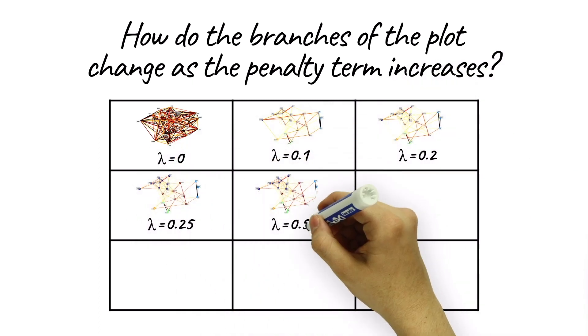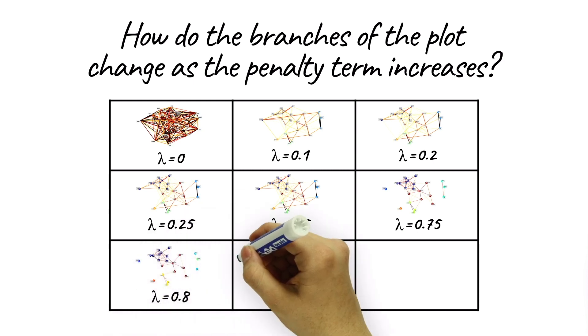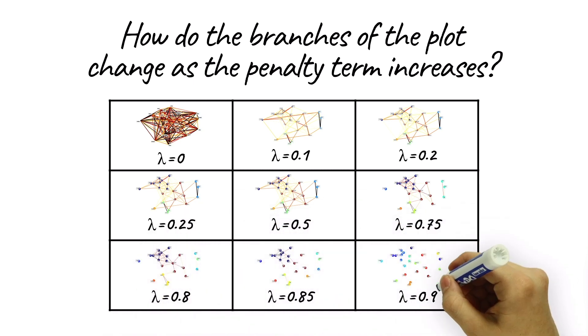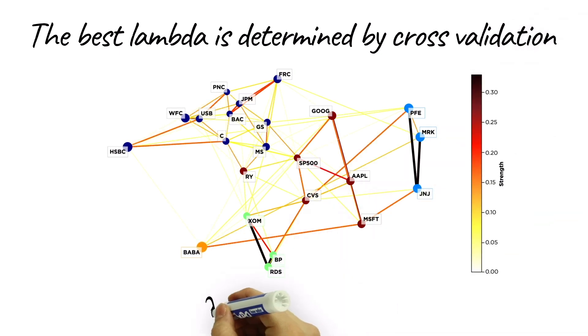When lambda equals zero, there is no penalty imposed and too many linkages. When lambda equals 0.9, there is too much penalty imposed and very few linkages. The best lambda is determined using cross-validation and allows a better fit for estimation purposes.